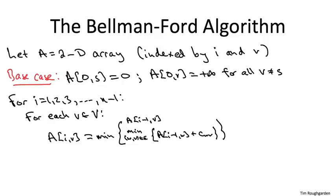Alternatively, from case two, there's also one candidate furnished for each choice of the final hop. So for each edge that ends at V, for each choice W, V, there's an option of taking a shortest path from S to W that uses only I minus one edges and tacking on that final edge W, V.